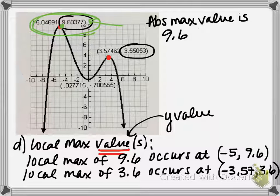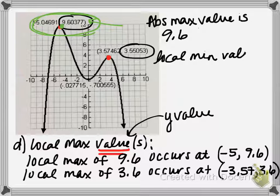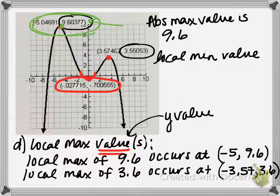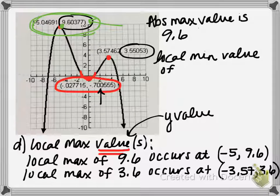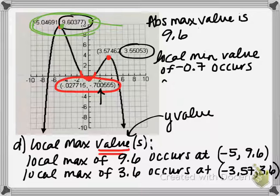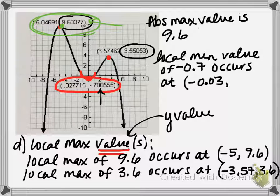Now for local minimums, we're looking for a low point on the graph. We have a local minimum value — here's the little low point on the graph. The coordinate where the local minimum occurs gives us the y value we need. The local minimum value is about negative 0.7, occurring at approximately negative 0.03 comma negative 0.7.